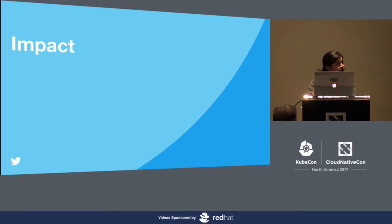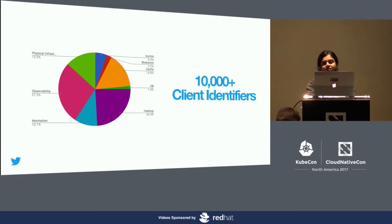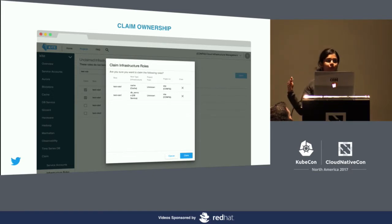The impact through Kite has been enormous. For example, Kite currently manages over 10,000 identifiers. Here is a split by infrastructure service. Clearly, Hadoop, observability, and monitoring services contain the largest set of client identifiers, while databases have a small set. This allowed us to improve ownership significantly and reduce unknowns. Here is a UI that helps users claim ownership for unknown identifiers. Currently, our infrastructure services report the client identifiers through our metering pipeline and owners can go and claim ownership of those identifiers.